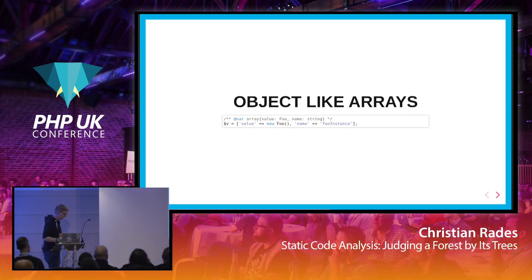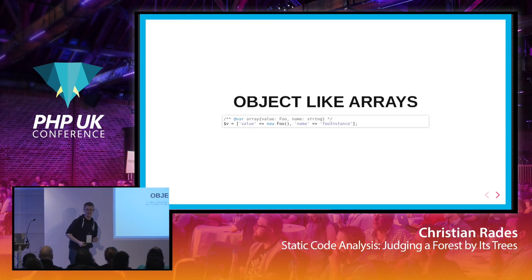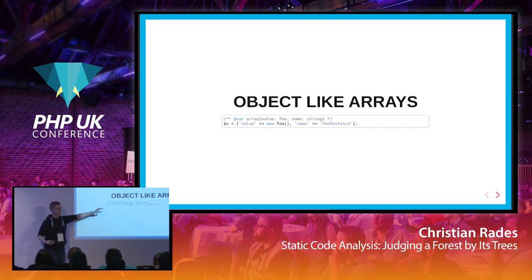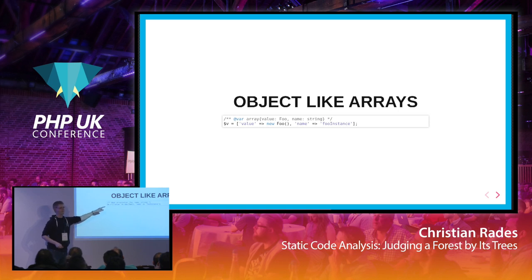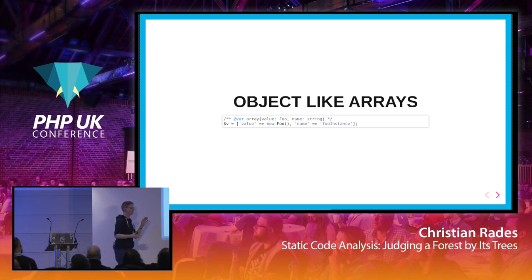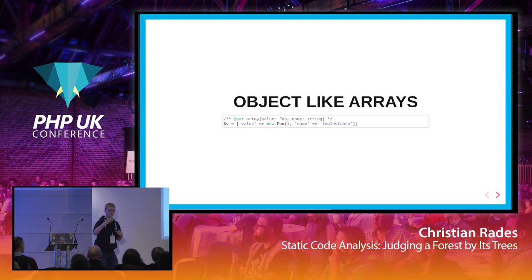Something quite special to Psalm is object-like arrays. As far as I know, Psalm is the only tool that does this — you can type specific keys in your associative arrays. What looks like a JSON object basically guarantees that whatever is in the variable has to contain an item under the key `value` and an item under the key `name`. This is useful for APIs, because you can write assertions for that.